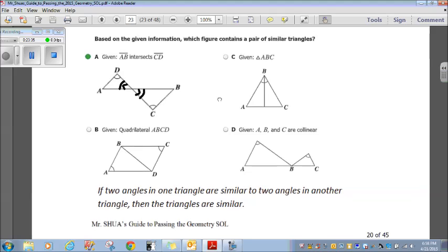Question 20. Based on the given information, which figure contains a pair of similar triangles? Given AB intersects CD. So, AB intersects CD. Well, it's already indicated that angle D and angle C are congruent, but then, excuse me, these two angles are congruent because they're vertical angles. So, I have these angles congruent and these angles congruent. So, that's two angles. So, angle angle. So, these two triangles are similar by the angle angle similarity, which is if two angles in one triangle are similar to two angles in another triangle, then the triangles are similar. Choice A. We don't need to even go any further. Choice A. That's it. Let's move on.